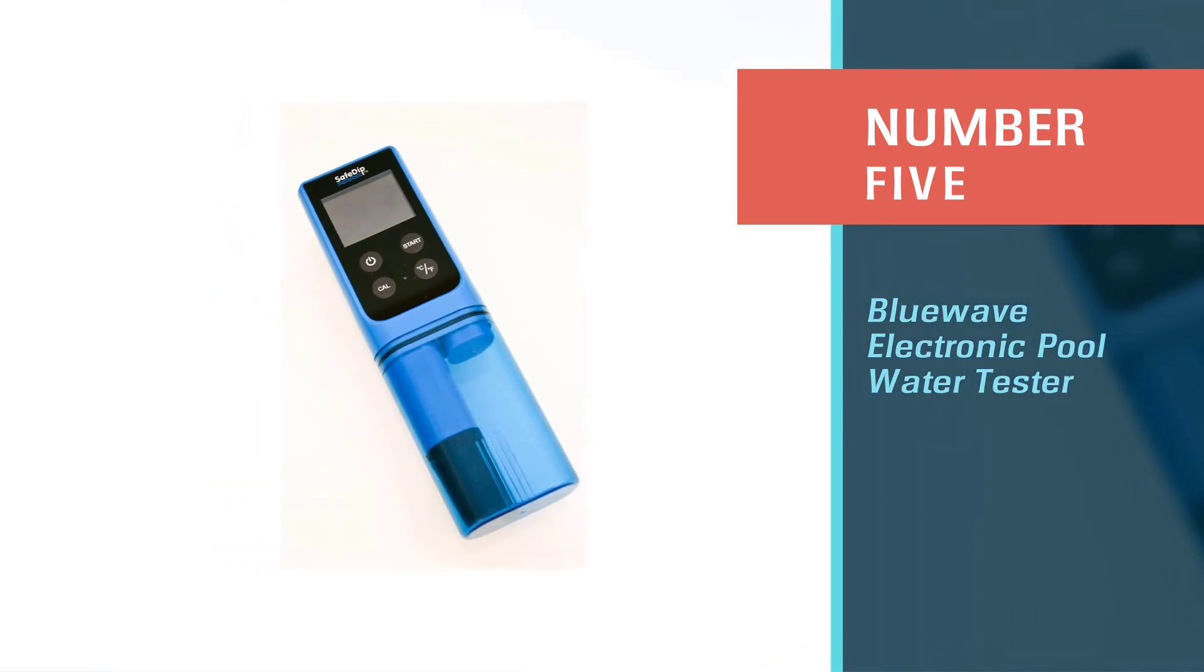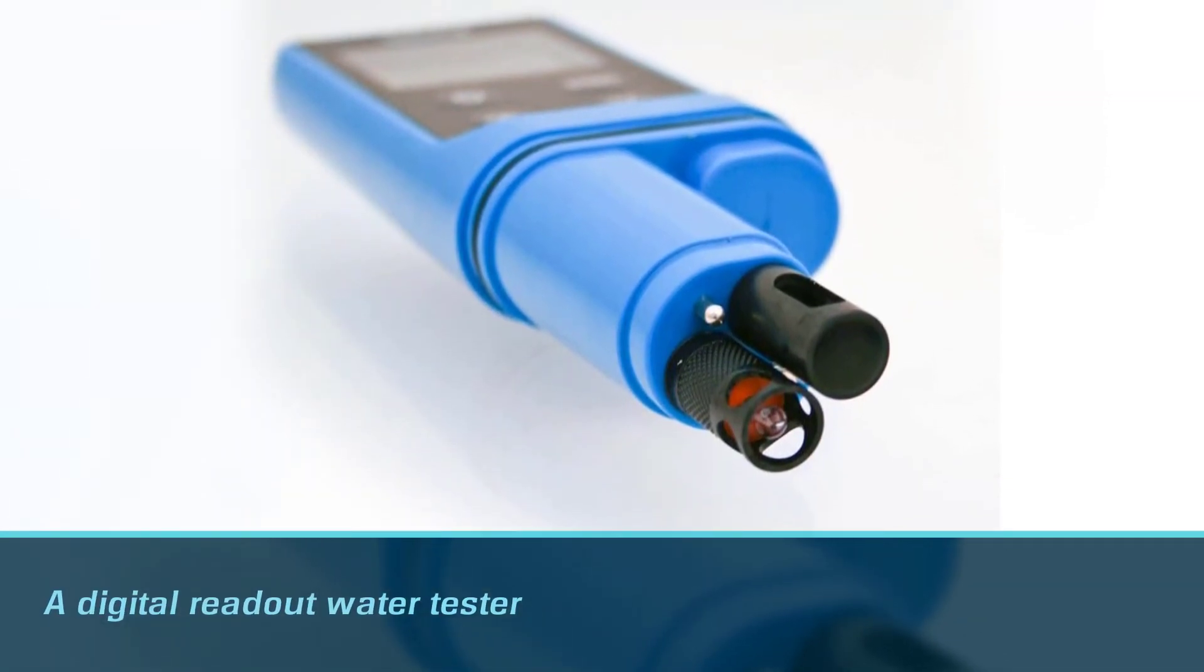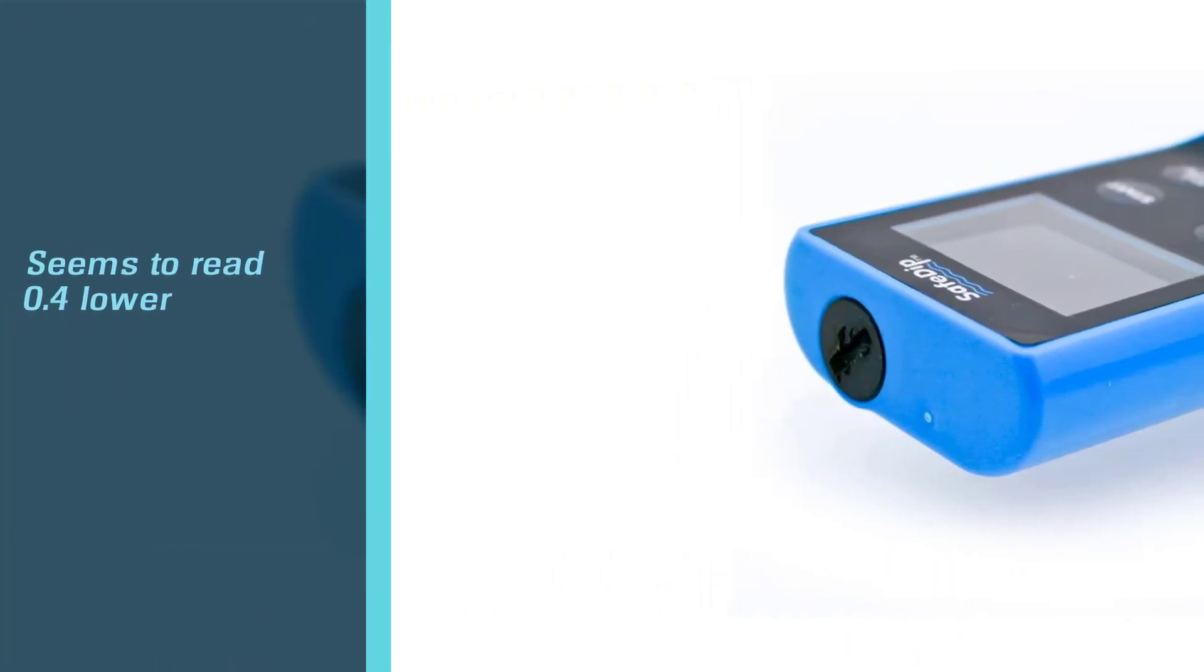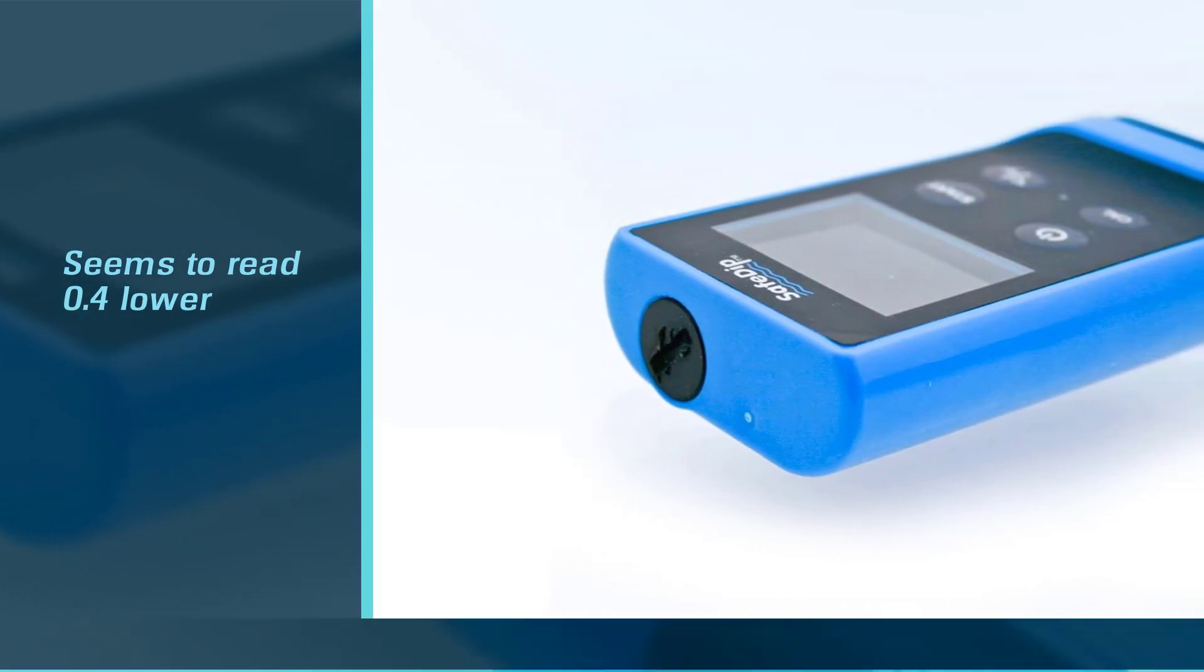Number five: Blue Wave Electronic Pool Water Tester. This is a digital readout water tester, but it's not up to the standards of the top pick. It doesn't provide an actual chlorine level reading. The pH readings aren't 100% accurate—after the initial calibration, it always seems to read 0.4% lower than it actually is.